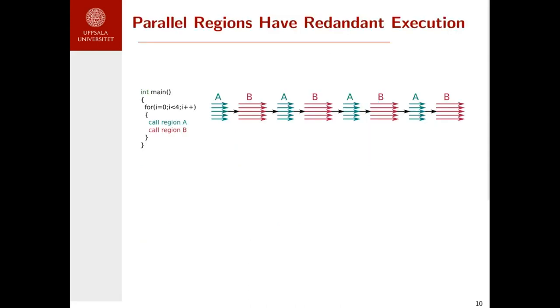We observed that parallel applications have very redundant behavior. This is what we can see here. We consider a parallel application with two regions, A and B, and we can see how these two regions are called multiple times during the application lifetime with exactly the same behavior.